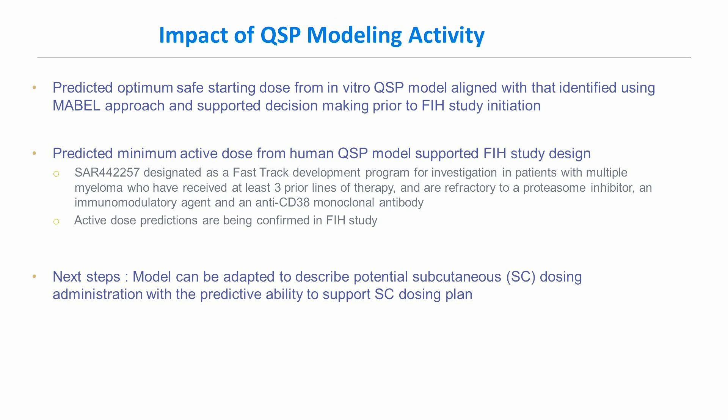In summary, the developed in vitro QSP model was used to predict an optimum safe starting dose, which was aligned with that identified using the MABEL approach and supported decision-making prior to first-in-human study initiation. The predicted minimum active dose from the human QSP model supported first-in-human study design, and the program was granted fast-track designation, with our model's active dose predictions currently being confirmed in the first-in-human study.